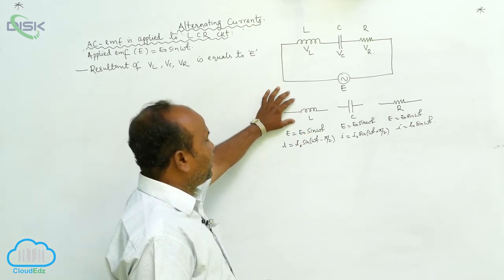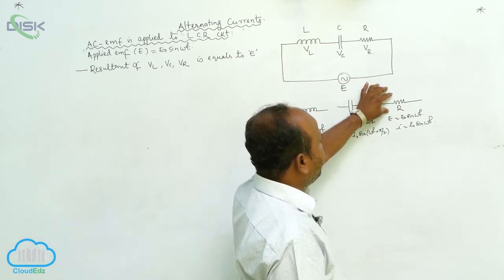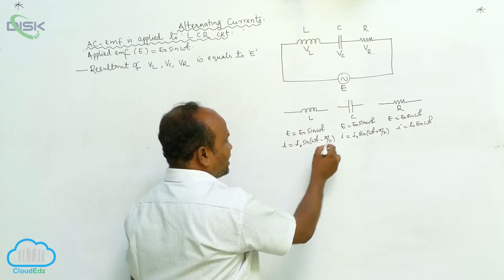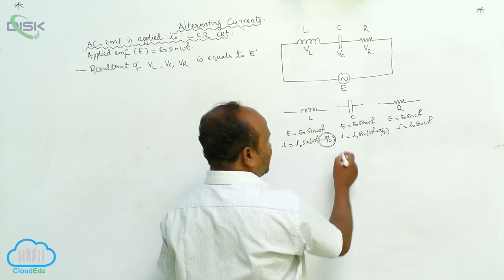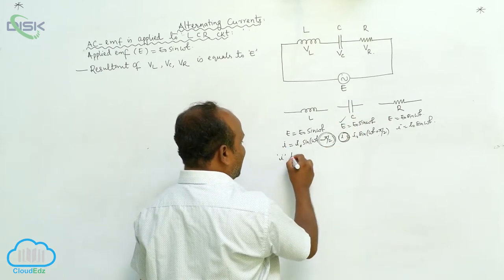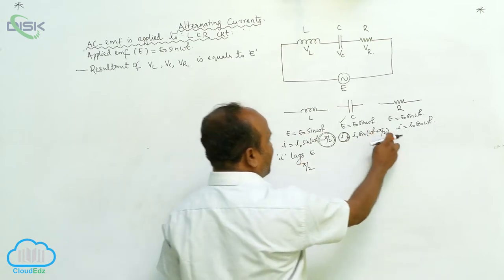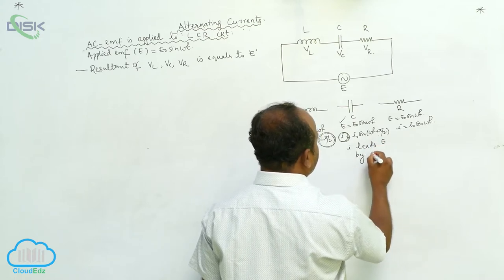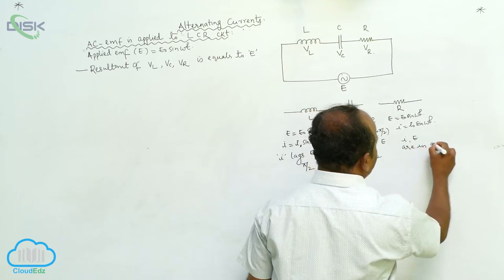When AC EMF is applied across only the inductor, current is lagging the EMF by 90 degrees. In the case of the capacitor, current is leading the EMF by 90 degrees. But in the case of the resistor, the current and EMF are in the same phase.